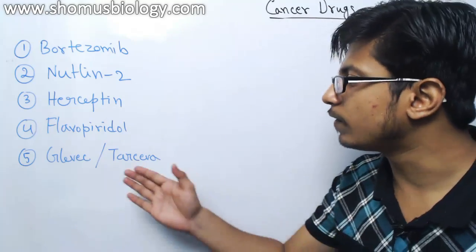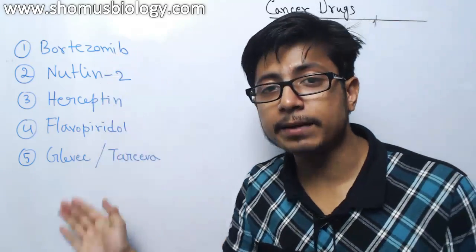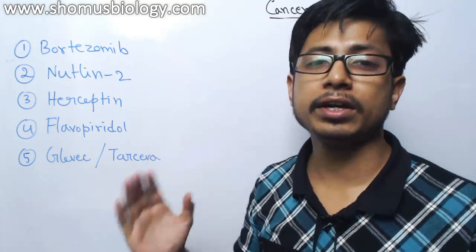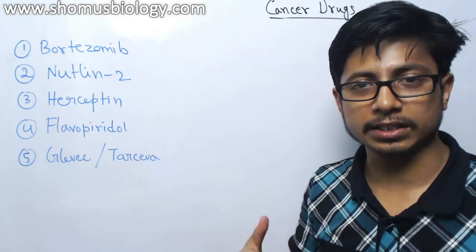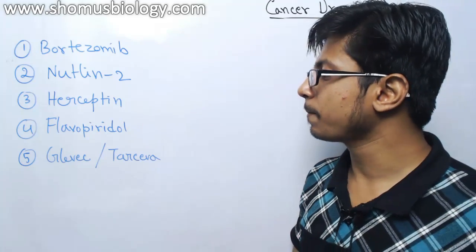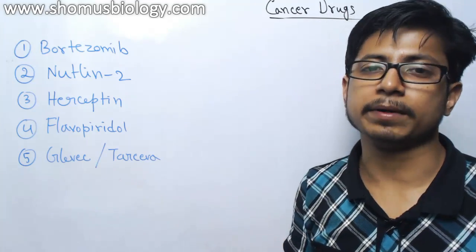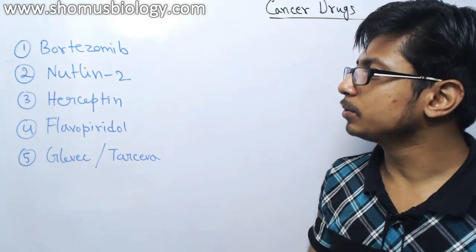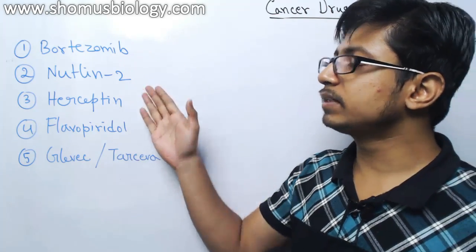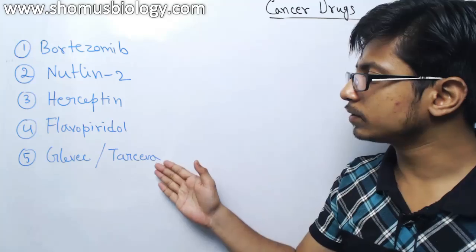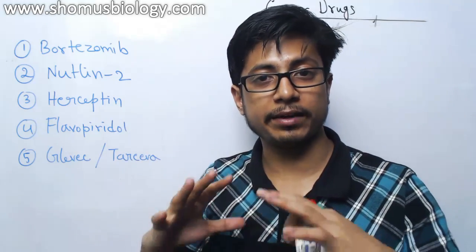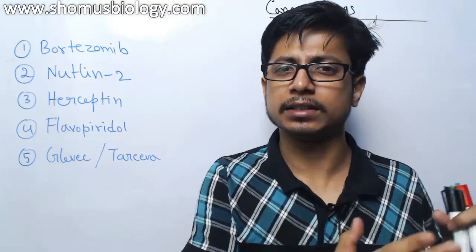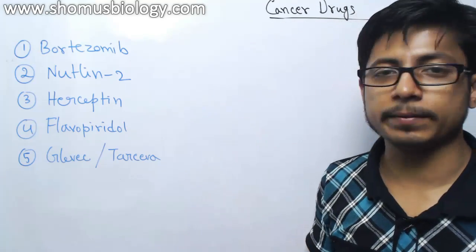Here I have listed five different types of drugs — mostly by generic name, though a few are listed by company name as well since they are more popularly known that way. These five types of drugs affect the cell in completely different zones, so we'll look at each one and their mode of action.